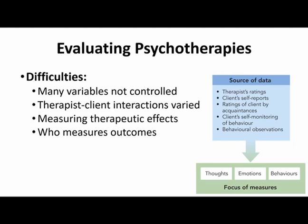It's also very hard to measure therapeutic effects. How do you determine if a therapy was effective? How do you quantify how much better someone's social skills are, or how much better their relationship with their mother is? These are very difficult to measure and to quantify, and you have to quantify them to compare across people and situations. And there's the problem of who's measuring the outcomes — whether the client self-reports, the therapist reports, or a third party evaluates — all of this affects the data and the conclusions we draw.